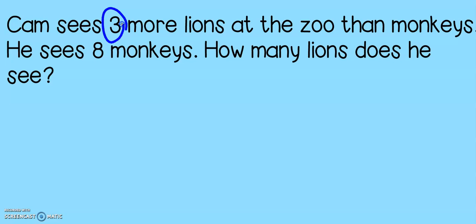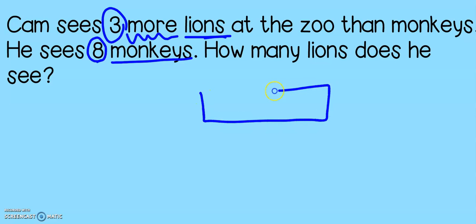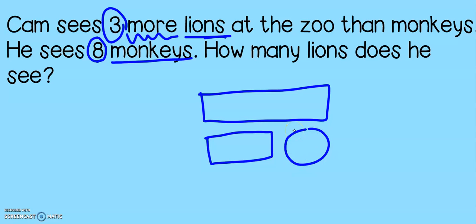Here is our last problem for the day. Cam sees three more lions at the zoo than monkeys. He sees eight monkeys. How many lions does he see? In this problem we're comparing lions and monkeys. It says he sees more lions, so let's give lions the big bar and give the monkeys the small bar.